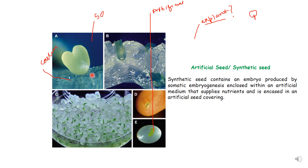Sometimes the isolated embryo is encapsulated in sodium alginate to become an artificial or synthetic seed. A synthetic seed contains an embryo produced by somatic embryogenesis enclosed within an artificial medium that supplies nutrients and is encased in an artificial seed covering — this allows the embryo to be used directly for germination. Please refer to Bhojwani and Razdan, or Biotechnology by P.K. Gupta, or any tissue culture textbook to read more about this topic.